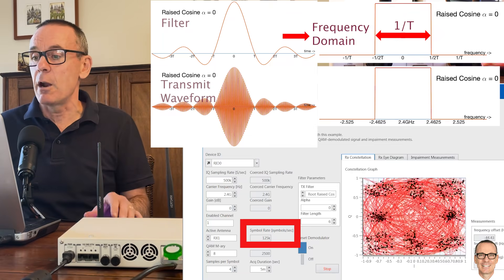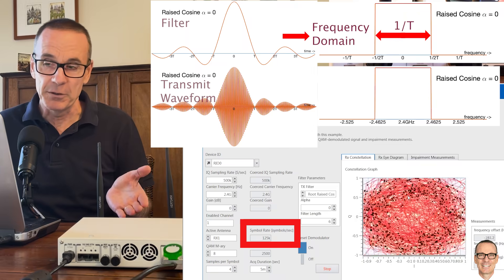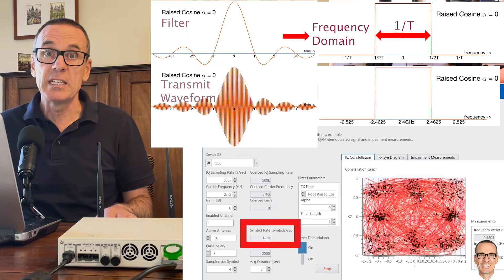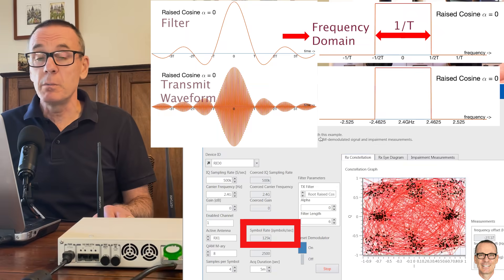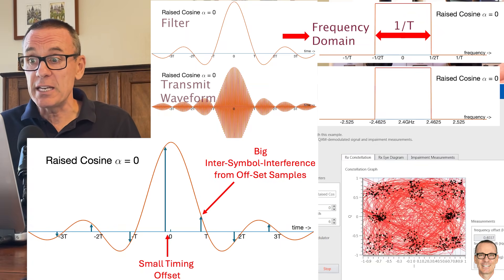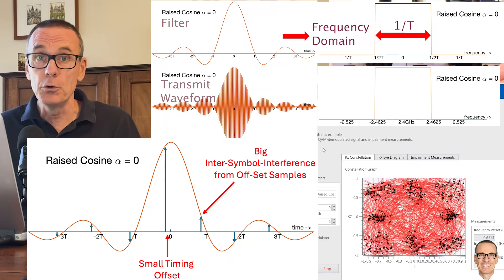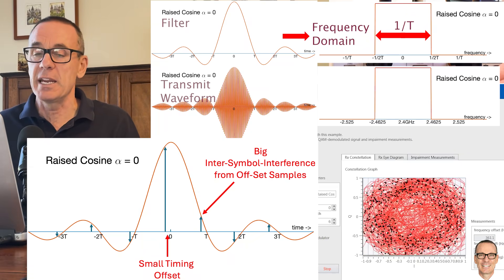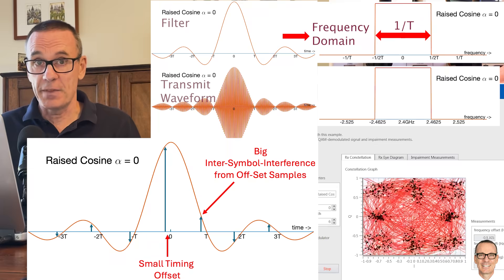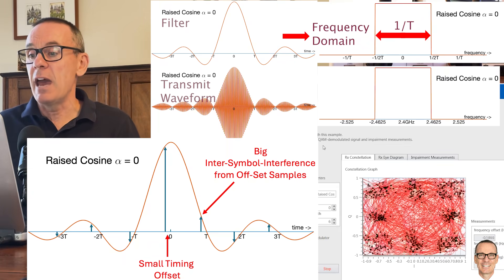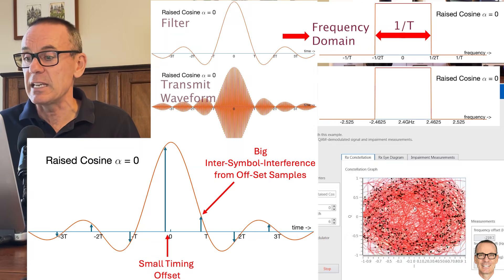Because you've squeezed it into that narrow bandwidth you have to pay a penalty and we can see now these eight constellation points are much more spread out. So one of the problems with a sinc function is that the waveform shape goes at an acute angle down through the sample points at the neighboring time slots for the next samples. So what that means is if you get your sampling slightly wrong you're going to have a big problem and we can see that here.